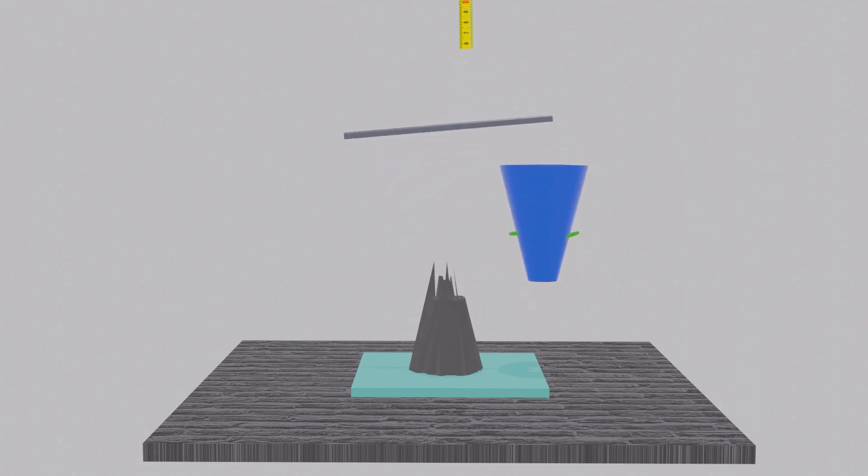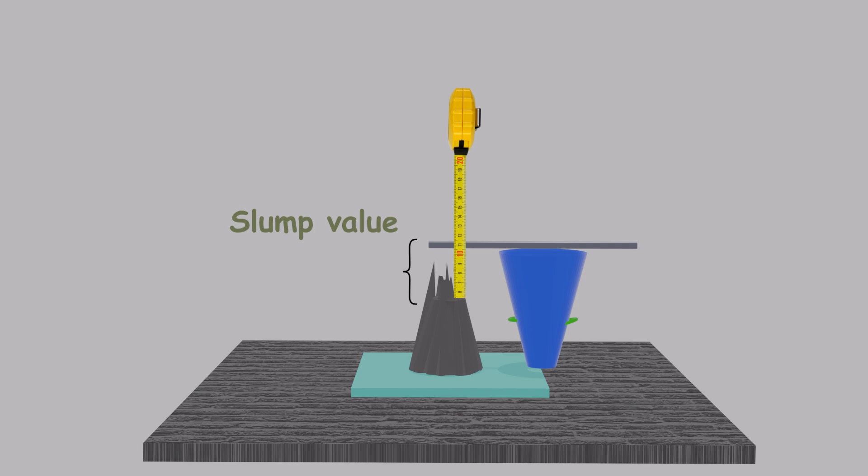Step 5. The concrete will slump. Use a ruler to measure the vertical drop from the original height of the cone to the top of the slumped concrete. This measurement is called the slump value.